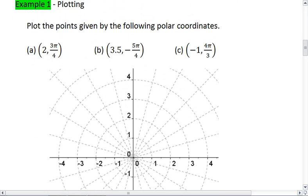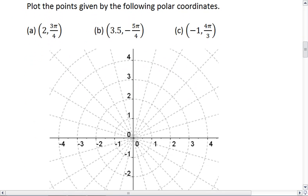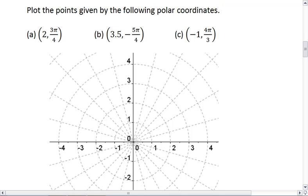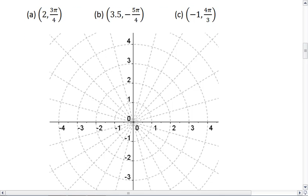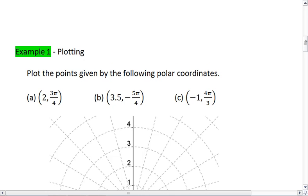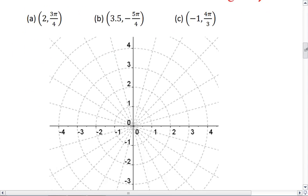Let's look at an example of just plotting some polar coordinates. I want you to plot the following points on the plane you see below. Remember that polar coordinates is always written radius and then angle. Try this on your own first, and then resume the video when you're ready to check your solution.